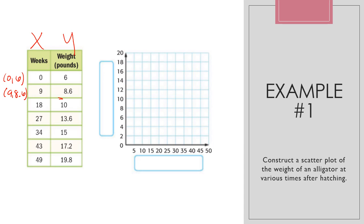Now looking at our graph, we need a label. On my x axis, I'm going to label this weeks. And on my y axis, I'm going to label this weight in pounds. Now I'm going to go ahead and just start plotting my points. Zero six, I'm going to go to the right zero and up six. I'm going to go to the right nine and up 8.6.